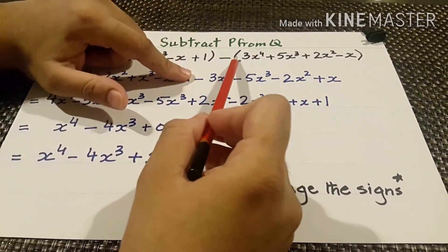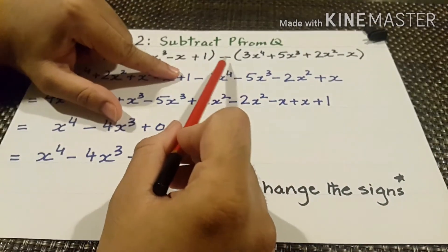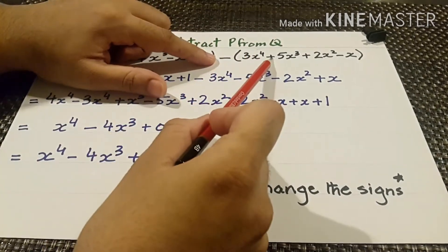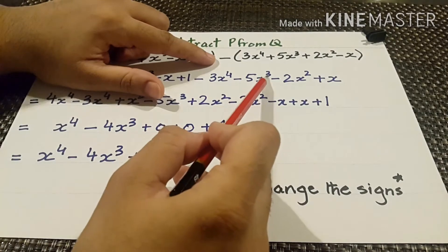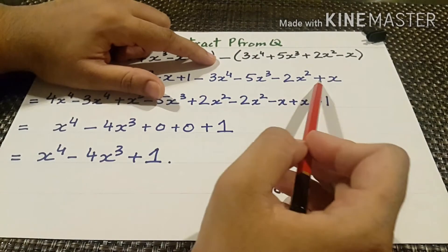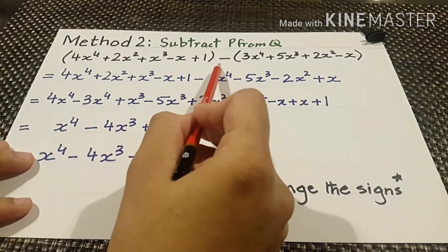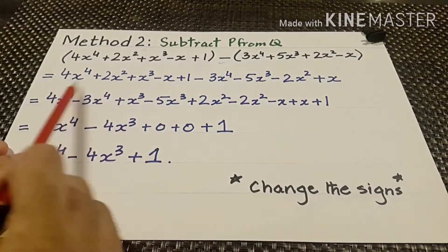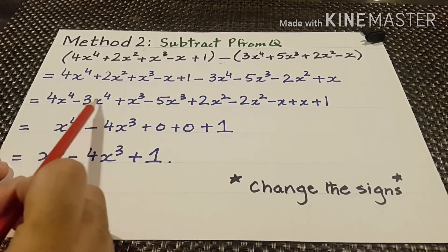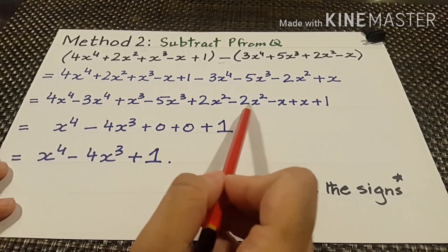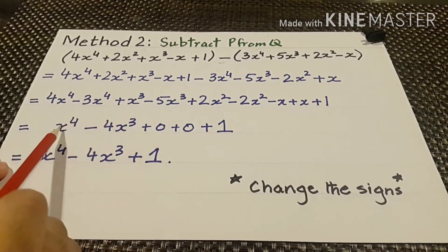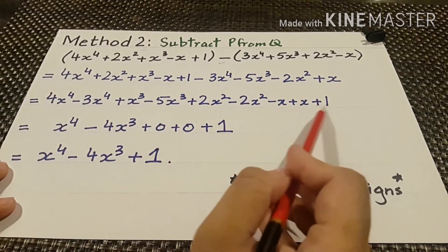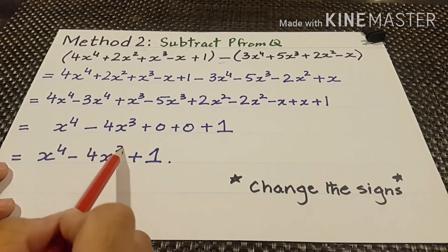We write q as it is, then when we open the bracket with the minus sign, the signs change: minus 3x to the power 4, minus 5x cubed, minus 2x squared, and plus x. Now arranging: 4x⁴ minus 3x⁴ plus x cubed minus 5x cubed plus 2x squared minus 2x squared minus x plus x plus 1. Solving: we get x⁴ minus 4x cubed — the squared terms cancel to 0, the x terms cancel to 0 — and plus 1.